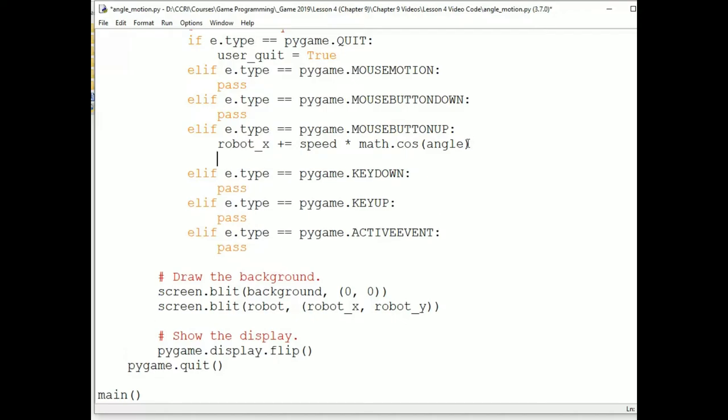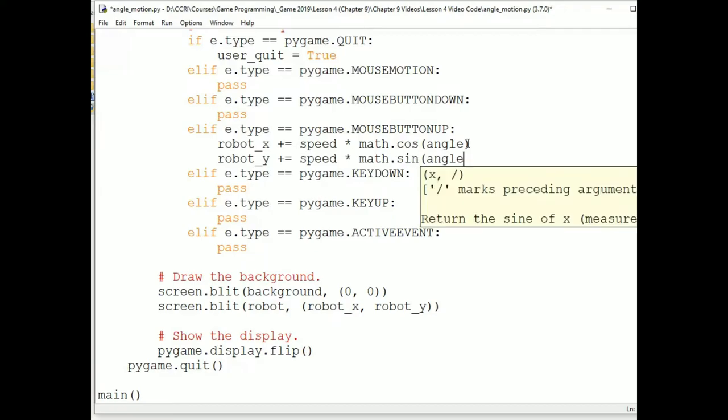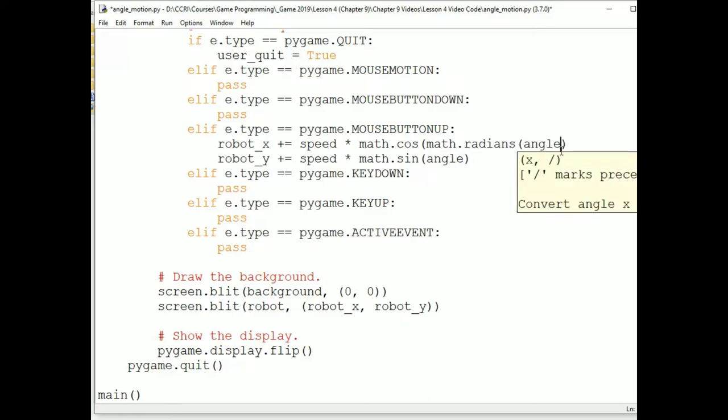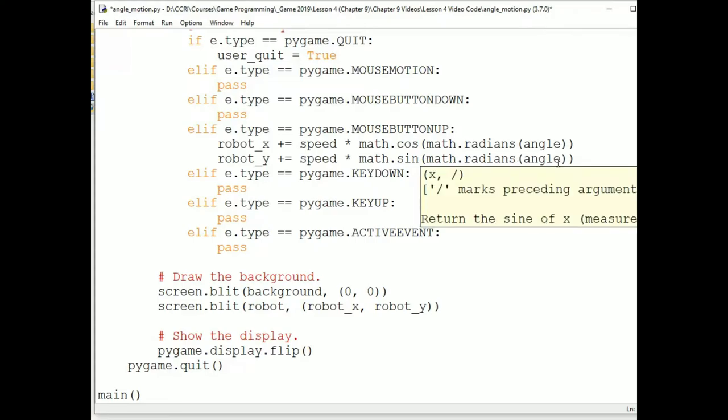And so, similarly, the y coordinate is almost as simple as robot y plus equals speed times math.sine angle. The first catch is that math.cos and math.sine take their arguments in radians, not degrees. That's fortunately easy to solve because the math library also converts angles to radians. So, I change angle to math.radians angle in both places. And that problem is solved.